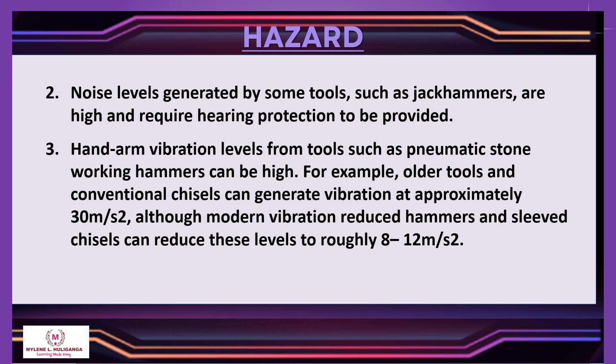Number 2: noise levels generated by some tools, such as jackhammers, are high and require hearing protection to be provided. Number 3: hand-arm vibration levels from tools such as pneumatic stone working hammers can be high. For example, older tools and conventional chisels can generate vibration at approximately 30 meters per square second, although modern vibration-reduced hammers and sleeved chisels can reduce these levels to roughly 8 to 12 meters per square second.